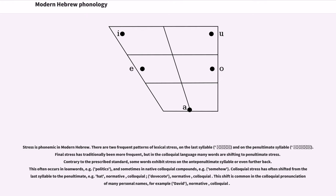Stress is phonemic in modern Hebrew. There are two frequent patterns of lexical stress: on the last syllable (mil'el) and on the penultimate syllable (mil'ra). Final stress has traditionally been more frequent, but in the colloquial language many words are shifting to penultimate stress. Contrary to the prescribed standard, some words exhibit stress on the anti-penultimate syllable or even further back. This often occurs in loan words, for example, 'politics', and sometimes in native colloquial compounds, for example, 'somehow'.